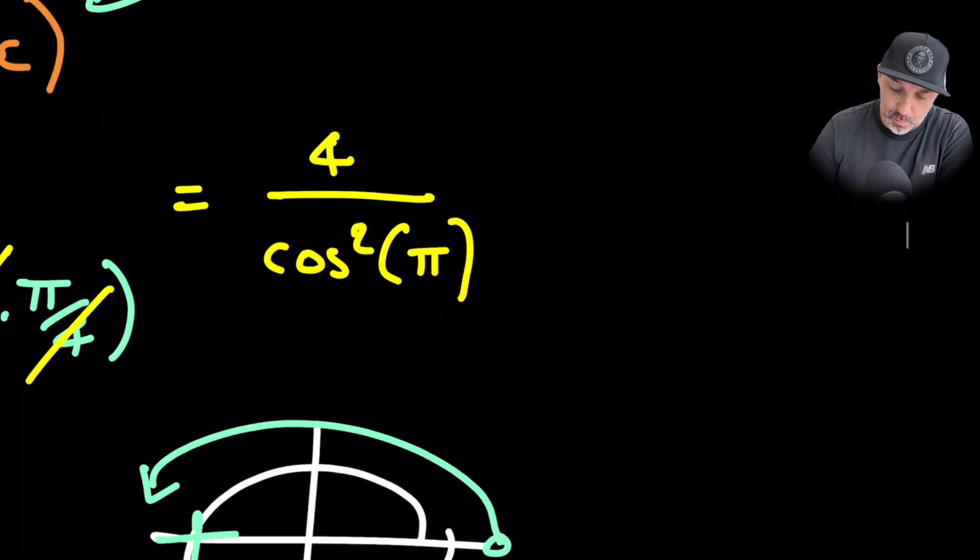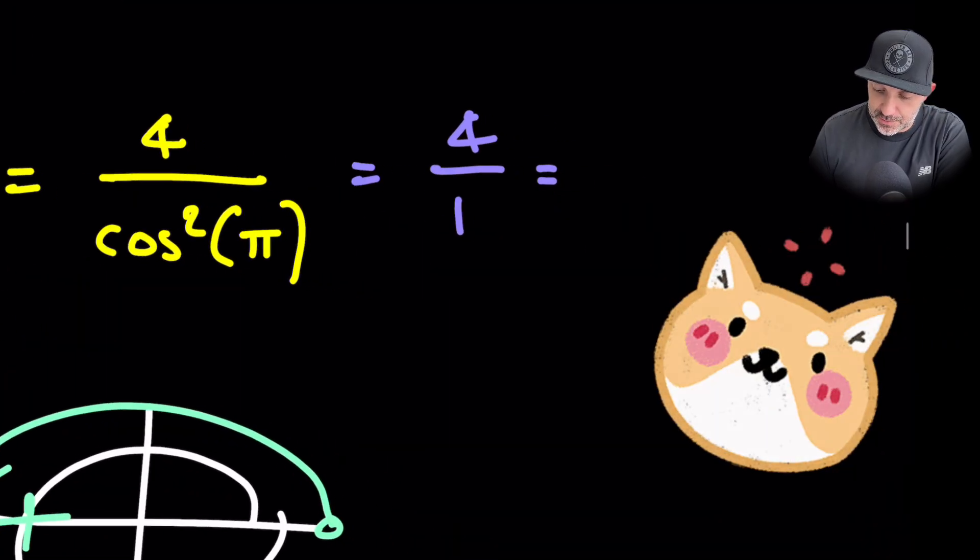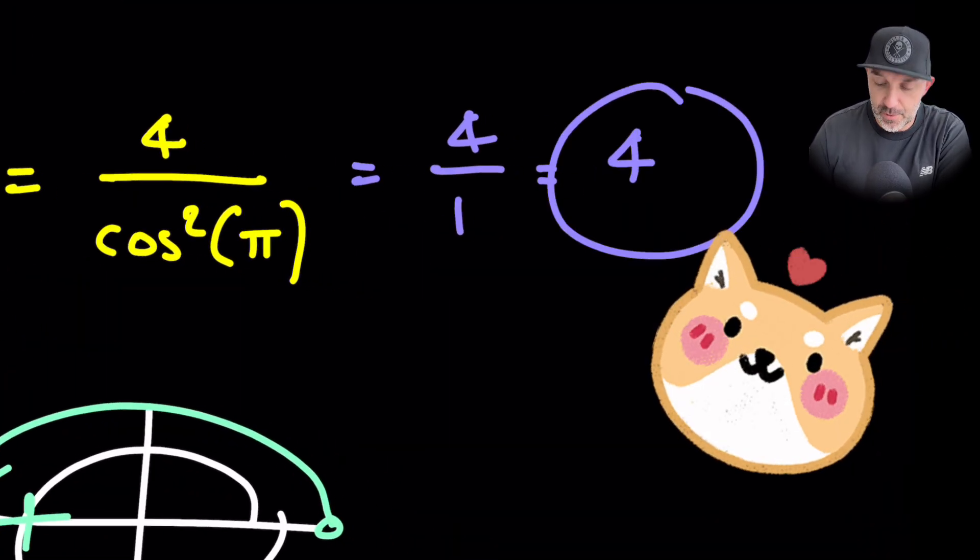So minus 1 squared will be 1. So the final result here is 4 over 1, which is just 4. That's question 1.